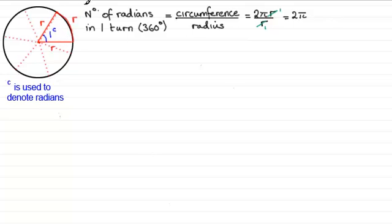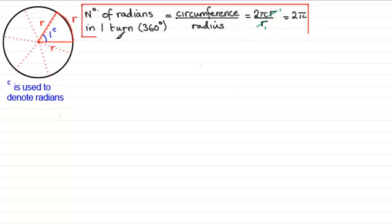So this is something you ought to remember. So we just board that off. And we'll just recap this here, that 360 degrees is the equivalent or is identical to 2π radians.